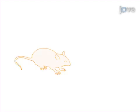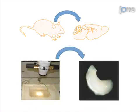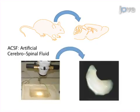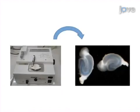This is accomplished by first extracting the mouse brain and dissecting the hippocampus in cold ACSF under the microscope. The second step is to cut transverse hippocampal slices with a tissue chopper.